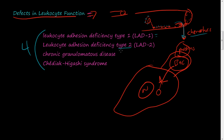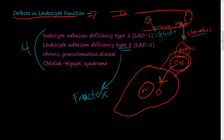Leukocyte Adhesion Deficiency Type 2 is similar — there's an adhesion deficiency. In this case, you can't metabolize fructose very well. You need fructose to create the oligosaccharides on the leukocyte. Remember there were selectins — E-type and P-type. These oligosaccharides attach to the selectin molecules, which help the leukocyte adhere to the cell wall, slow it down, and assist with diapedesis. LAD2 is less severe than LAD1.